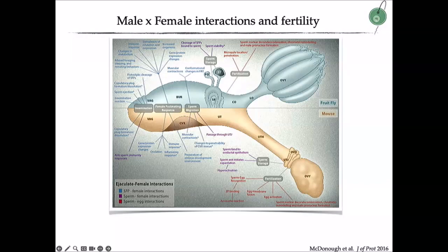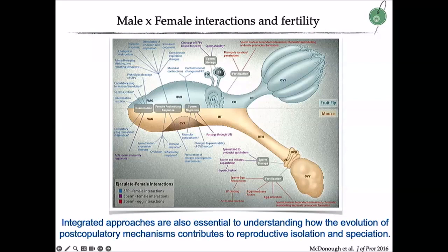About seven or eight years ago, we sat down and wrote a review about all of the different potential classes of post-copulatory molecular interactions, thinking specifically about post-mating reproductive isolation. There are lots of molecular and cellular interactions that occur within the female reproductive tract, but oftentimes we don't know what the molecular players are. Integrated approaches involving both sexes are really important for understanding the evolution of post-copulatory mechanisms that ultimately contribute to reproductive isolation and speciation.